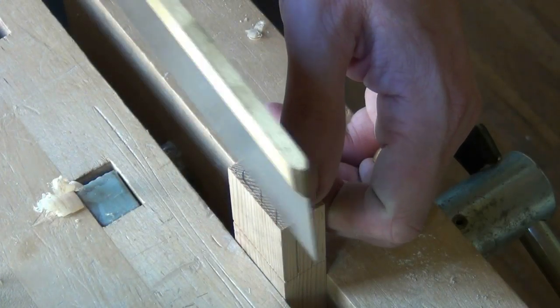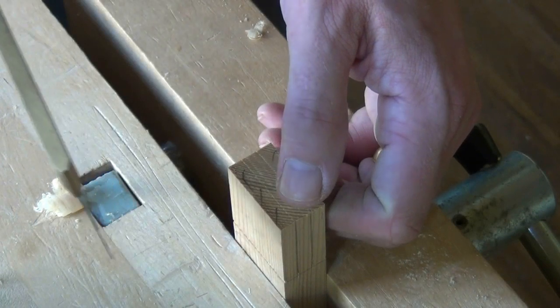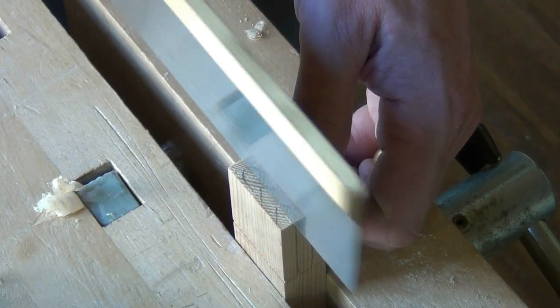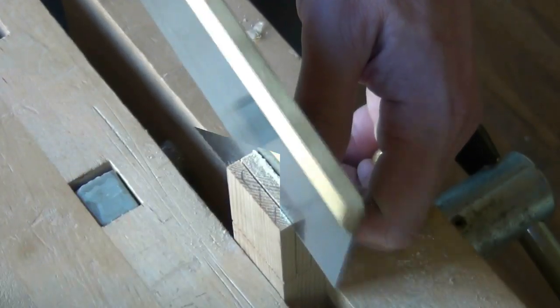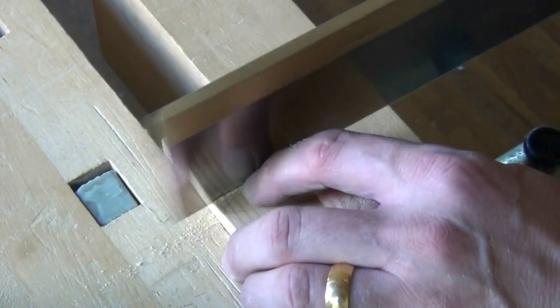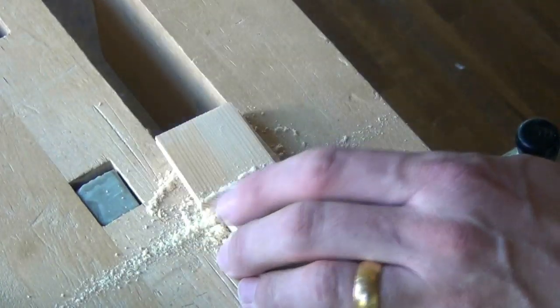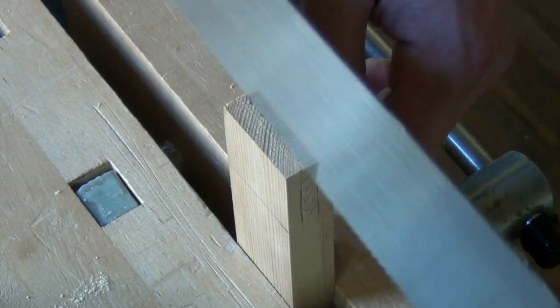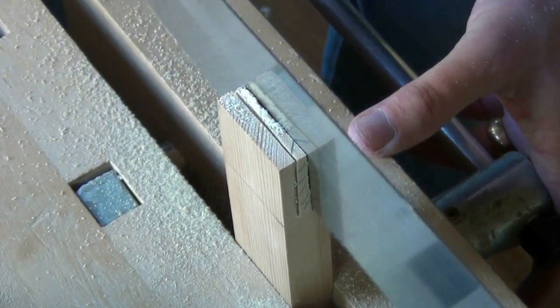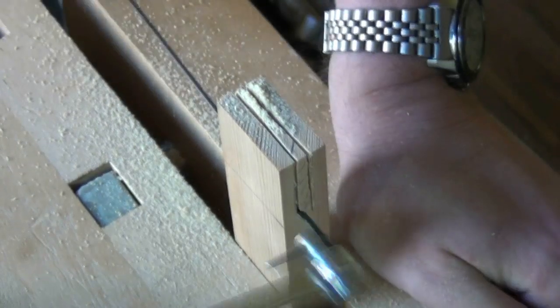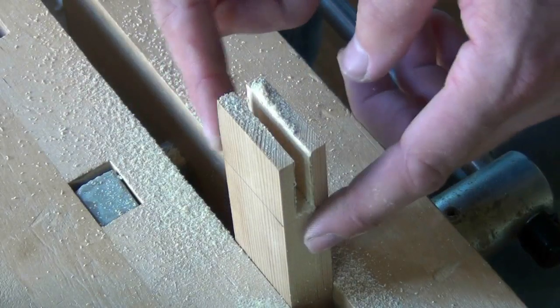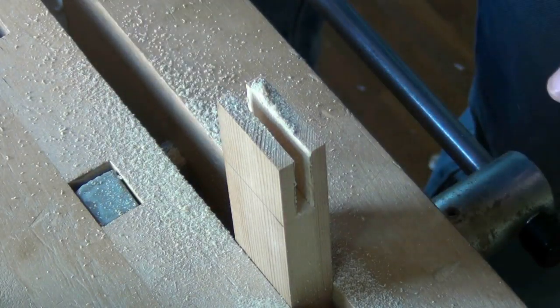Now sawing the cheeks is quite simple. Stay on the waste side of the line. And then we can clean out and cut the bottom of this with the mortise chisel.